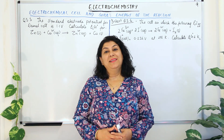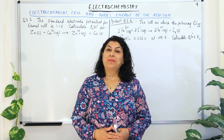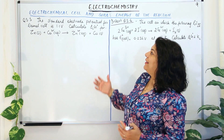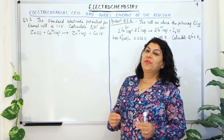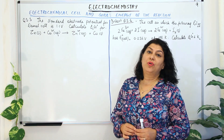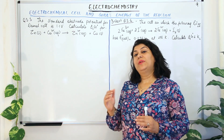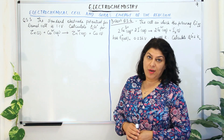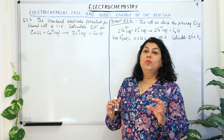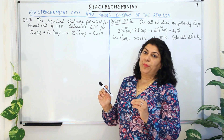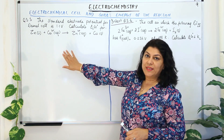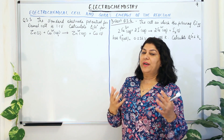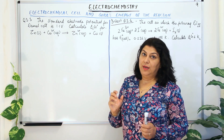Hello, I am Seema and welcome to part 9 of the chapter electrochemistry. In part 8 I was explaining the electrochemical cell and its relationship with Gibbs energy of reaction, and also the relationship between Gibbs energy of reaction and the equilibrium constant. Moving ahead with the same topic, I will now solve one solved example and one in-text question in order to solidify the understanding of this topic.